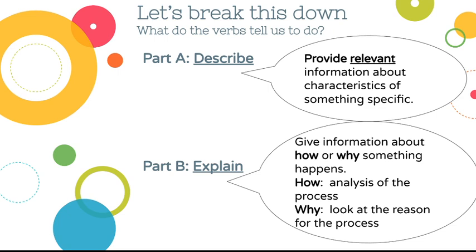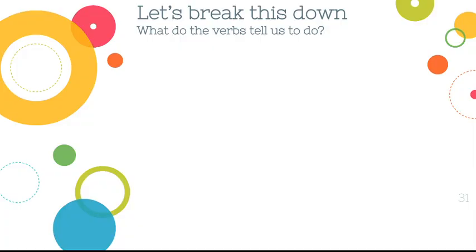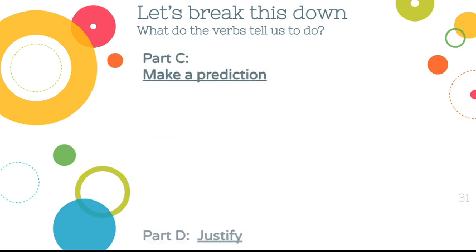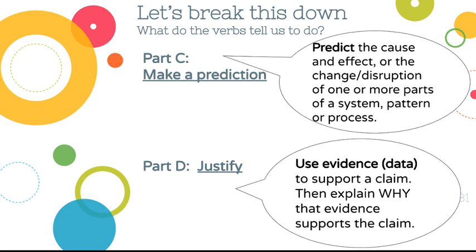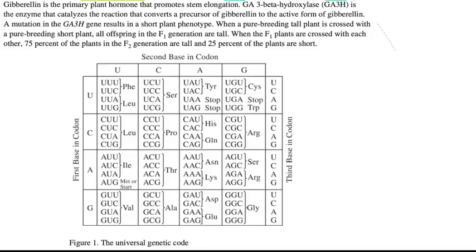Part C asks you to make a prediction — predict the cause and effect of a change in a biological system — and Part D asks you to justify by using evidence to support a claim and explaining why that evidence supports it. Your prediction should be based on logic and reasonable scientific understanding.